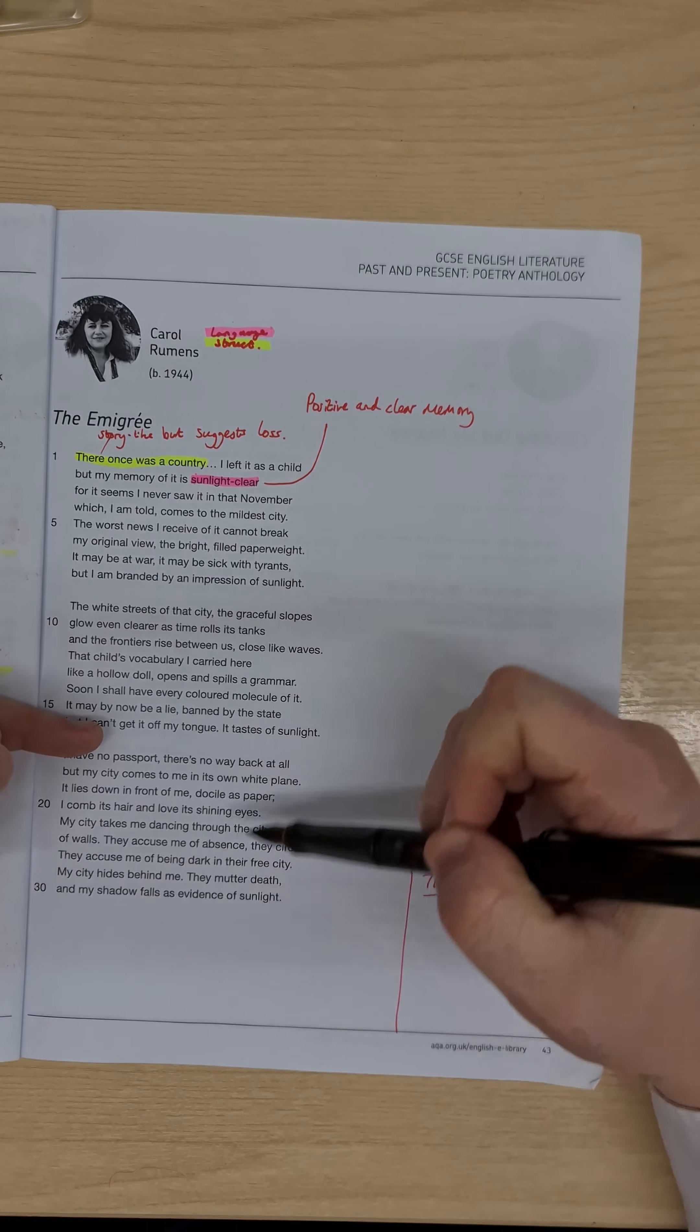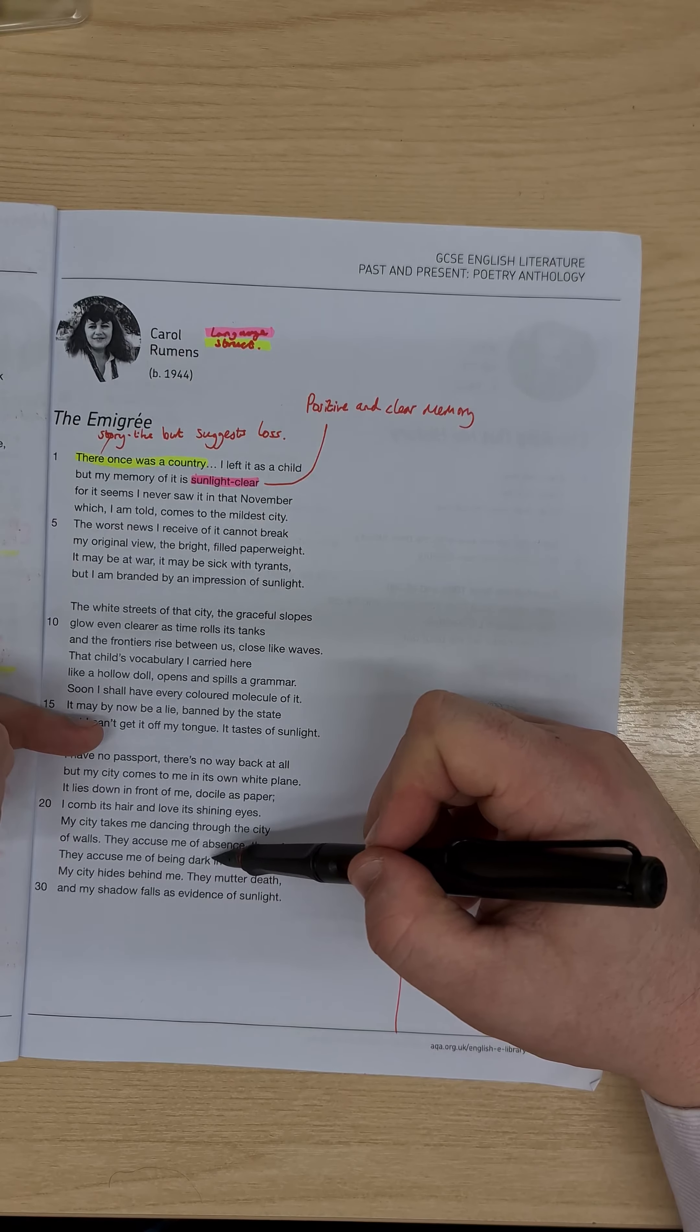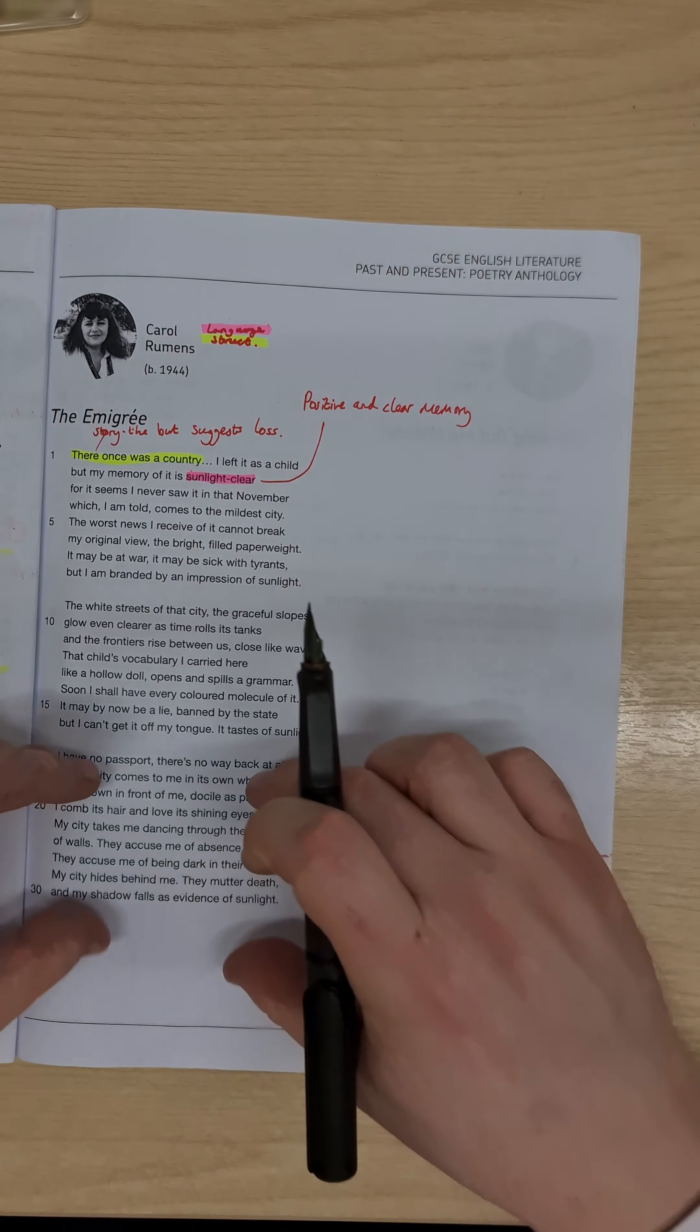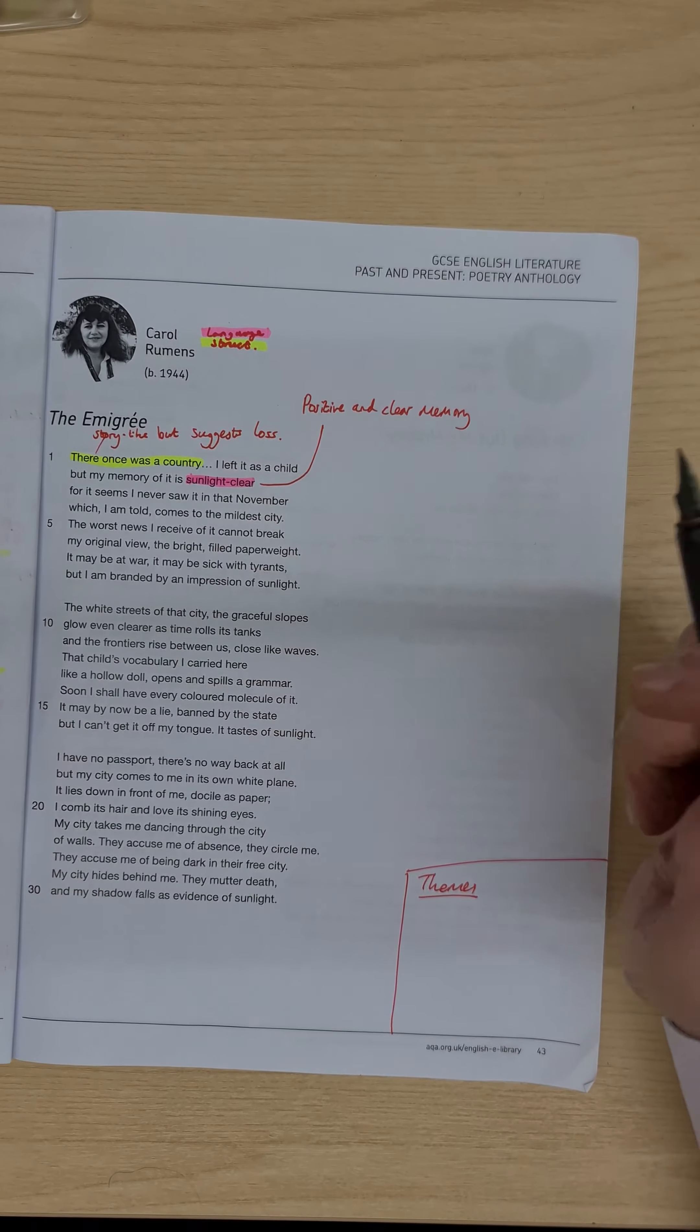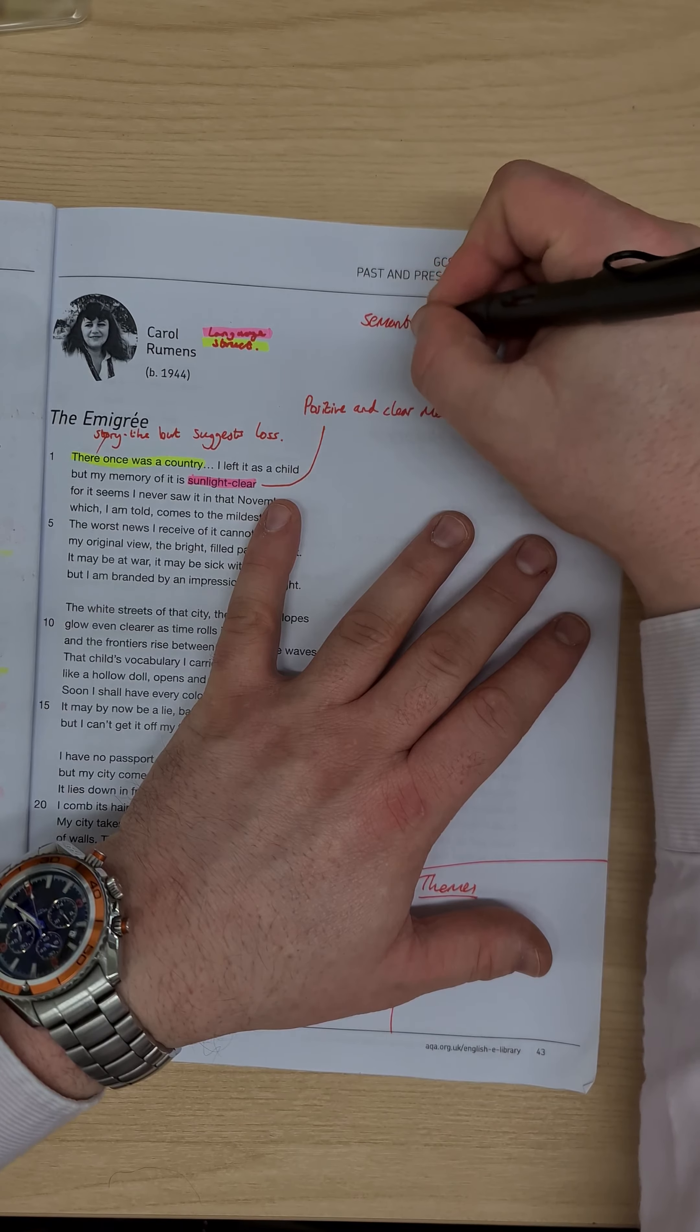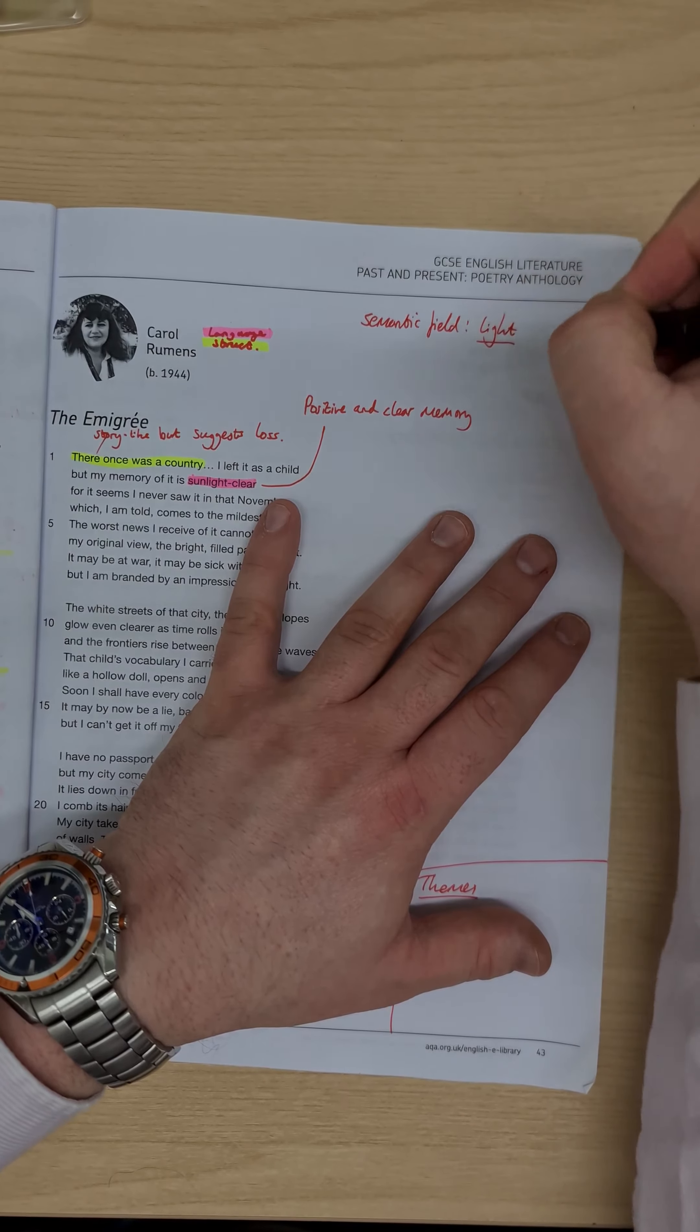And when I personally look through this, I can only really find one example of light imagery, and it's actually contrasting, where we have dark. We have that image where the speaker's being accused of being dark in her current sitting. It's almost contrasting this section with the previous two. We'll come back to that more later on, but it might be worth making a note up here of a semantic field of light.